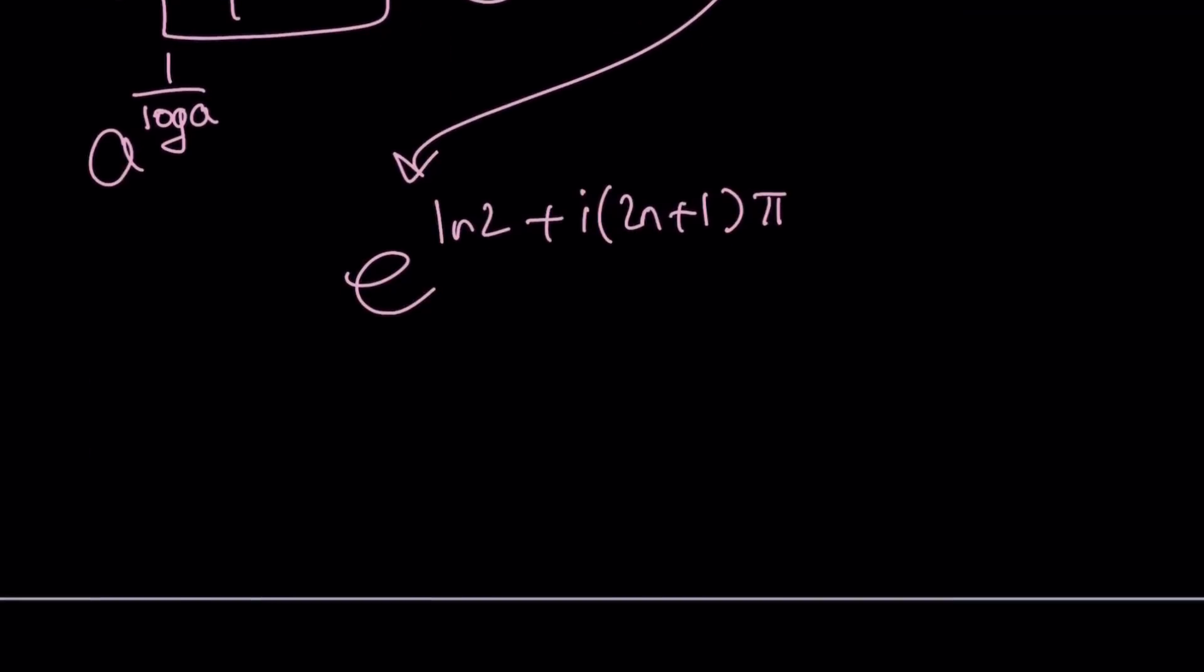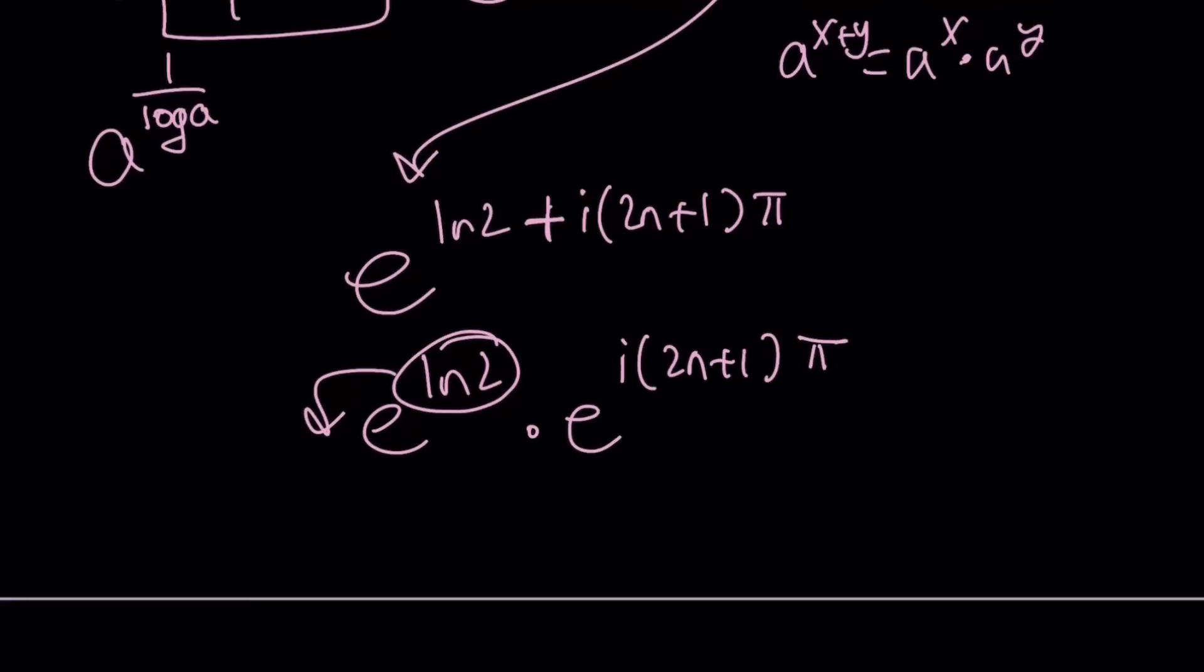So here we have the sum of the exponents, which indicates e to the power x plus y can be written as e to the x times e to the y. It's a product. So I can write it as e to the power ln 2 times e to the power i 2n plus 1 pi. And then from here, this becomes ln 2 times ln e, which is just by definition, it's 2. E to the power ln x is x.